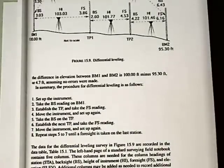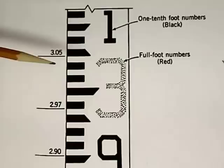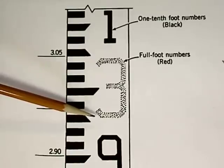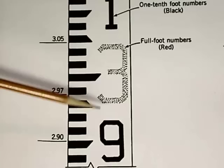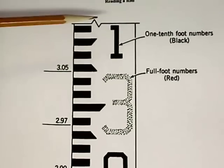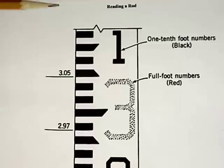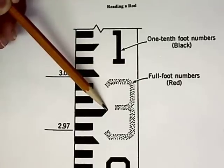Now we want to focus on how we get these numbers, and in order to do that we have to take a look at reading the rod. We're talking about a Philadelphia rod. It will have these great big red numbers — those are full foot values. The smaller numbers are tenth-foot values. Each of the little marks is equivalent to a hundredth of a foot. Remember that we read to the points or edges, so if our rod reading was to this point, that would be 3.00 feet.